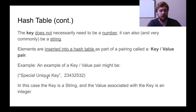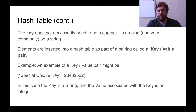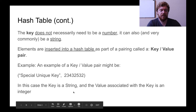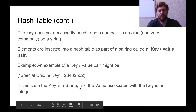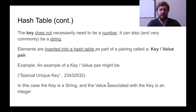Your key really could have been anything — 'hello world,' 'foobar,' whatever. The value here is this number: 2, 3, 4, 3, 2, 5, 3, 2. In this case the key is a string — the key is what's on the left, and the value associated with the key is an integer. What gets stored inside the array inside our hash table would be this value.